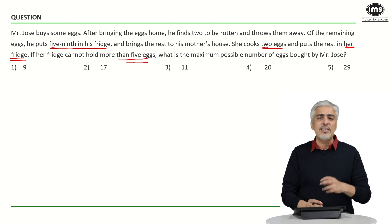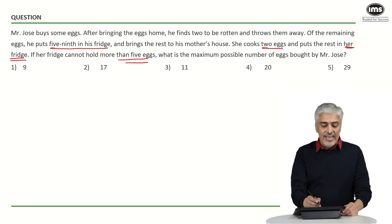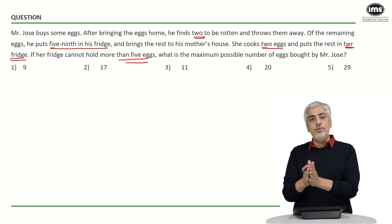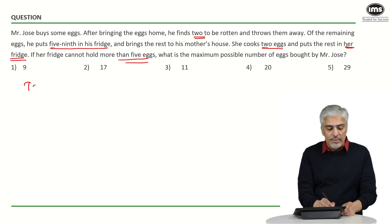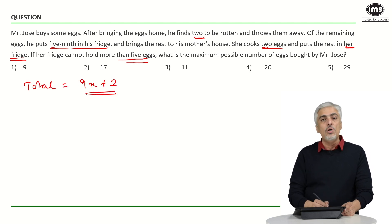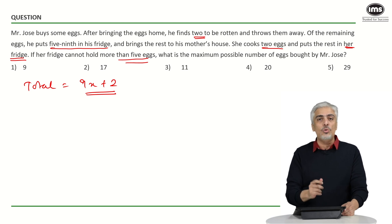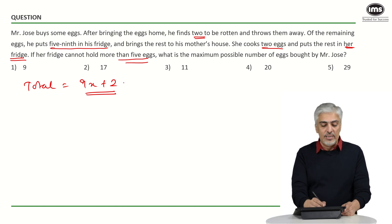One approach is I would have used options and one is maybe putting out a variable. So he has found 2 eggs to be rotten and after that he puts 5 ninth in the refrigerator. So start with let the total number of eggs be 9x plus 2. Now this was a very important step.